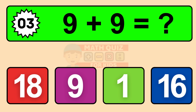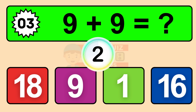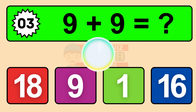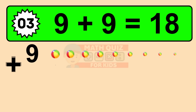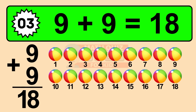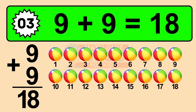Question three: nine plus nine equals what? The answer is nine plus nine is 18. Let's count it. One, two, three, four, five, six, seven, eight, nine, ten, eleven, twelve, thirteen, fourteen, fifteen, sixteen, seventeen, eighteen.